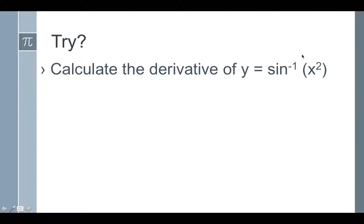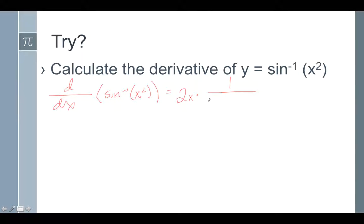Let's see what that looks like. To take the derivative of sine inverse of x squared, you need to take the derivative of the inside piece using the chain rule, so that's 2x, times the derivative of the inverse function, which is 1 over the square root of 1 minus something squared. That something is x squared, so we get 2x over the square root of 1 minus x to the fourth. It really is as easy as that once you put these derivative rules to memory.